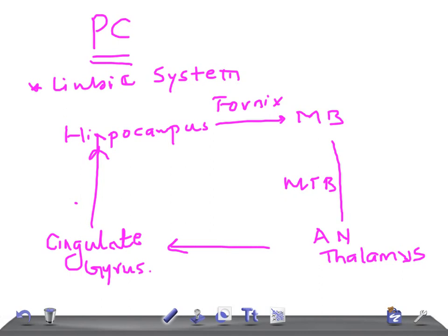Through thalamocortical fibers. And this cingulate gyrus is interconnected with the hippocampus with the fibers known as cortico hippocampal fibers. So this is known as Pappers circuit.